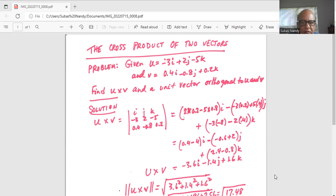So we have ultimately 0.4 minus 4 is minus 3.6i minus 2 minus 0.6 is 1.4j plus 2.4 minus 0.8 is 1.6k.